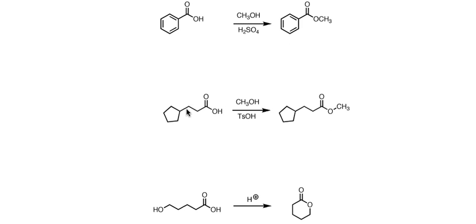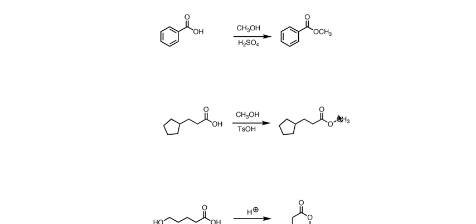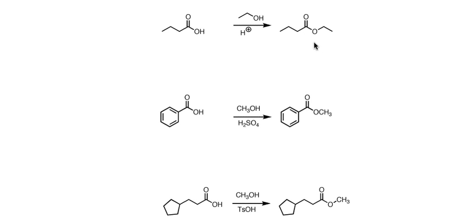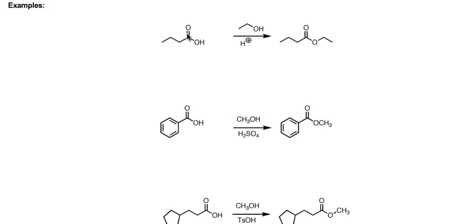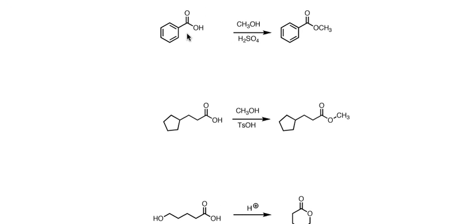In the next example we have a longer chain carboxylic acid. Again we're adding CH₃OH and a strong acid catalyst — tosic acid, TsOH — and we're forming a methyl ester. Notice that in all these reactions, all we've changed is the OH going to O-R, whatever our alcohol is. The left-hand side of the molecule does not change at all.